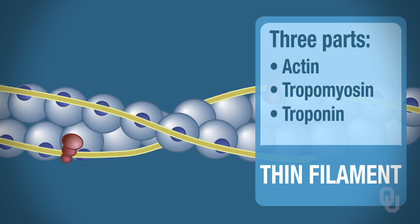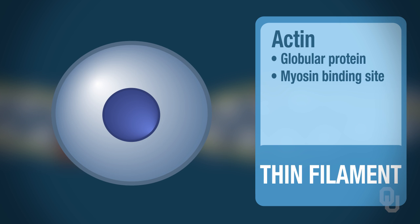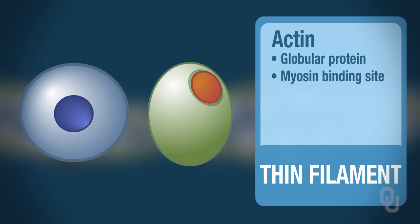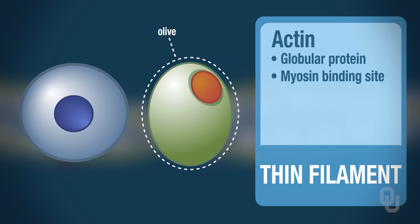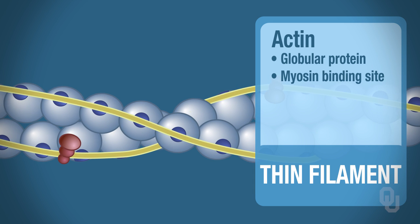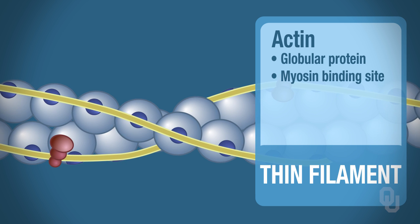The actin is a globular protein. When you look at this actin molecule, it has a center dot, and that center dot is the myosin binding site. I tend to think about actin like an olive. If you think about a green olive with a red pimento, the pimento part is the myosin binding site and the entire olive is the actin. So what you have when you look at the thin filament is a whole string of olives, and each olive has this myosin binding site.